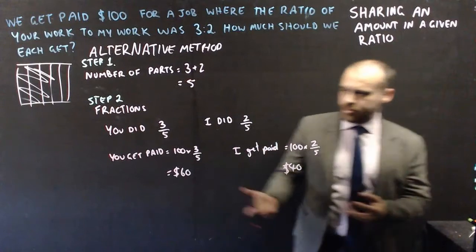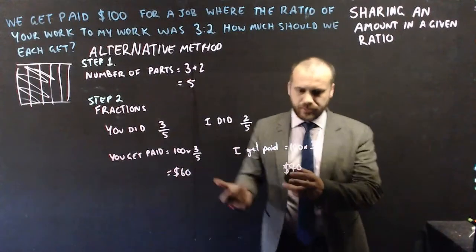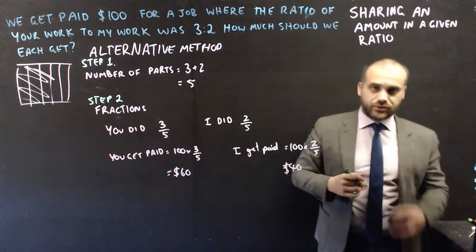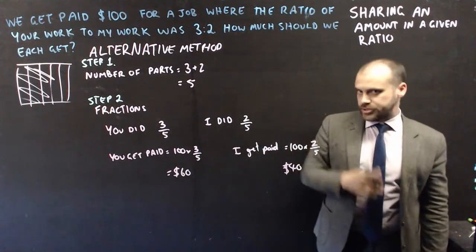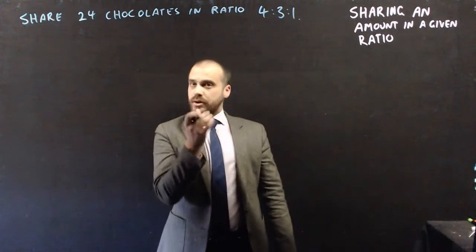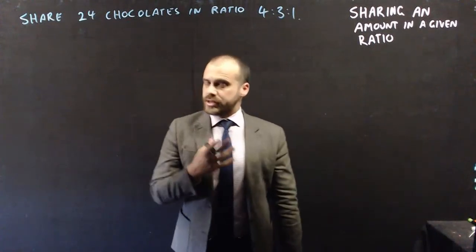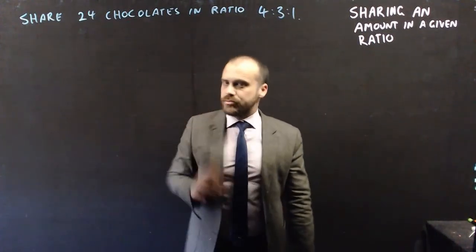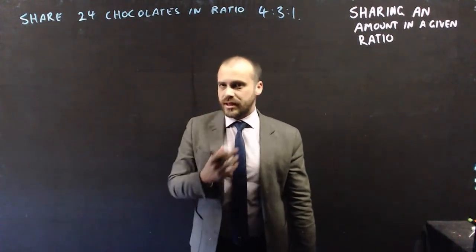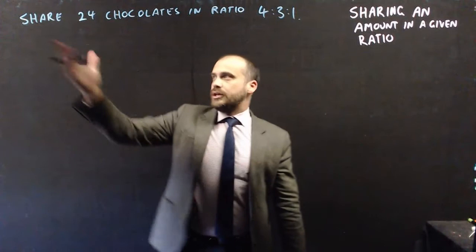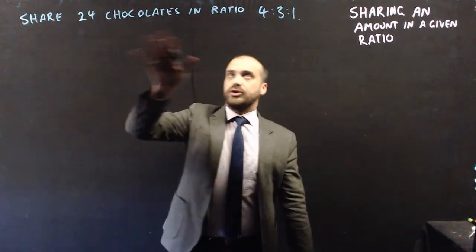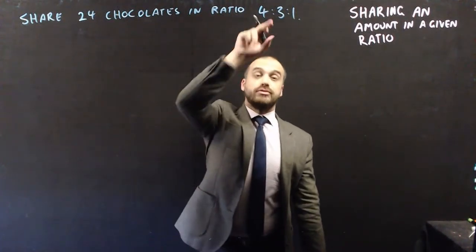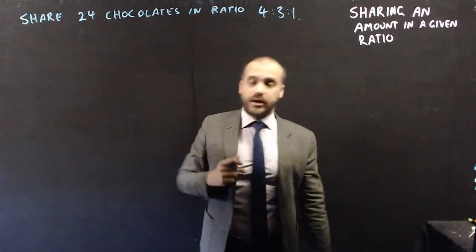You can check your answer because 60 plus 40 equals 100 — that looks right. Now I'm going to do one more example working both methods. Share 24 chocolates in the ratio 4 to 3 to 1.